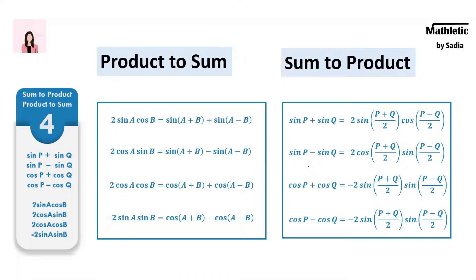In this video, I will be explaining how to derive the sum-to-product and product-to-sum trigonometric identities. We will start with product-to-sum first, and then using those four formulas, we can find the sum-to-product version. So let's get started.